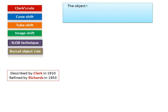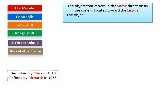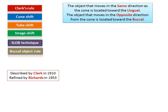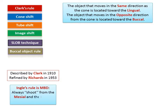The object that moves in the same direction as the cone is located towards the lingual — that's 'Same Lingual.' The object that moves in the opposite direction from the cone is located towards the buccal — 'Opposite Buccal.' Hence the acronym SLOB: Same Lingual Opposite Buccal. Stated more simply, Ingle's rule is MBD: always shoot from the mesial and the buccal root will be to the distal.